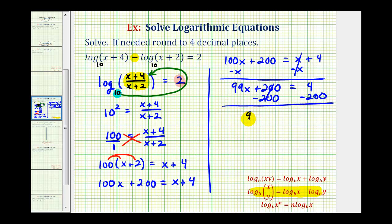So we have 99x equals negative 196. Last step, divide both sides by 99. So we have x equals negative 196 divided by 99.